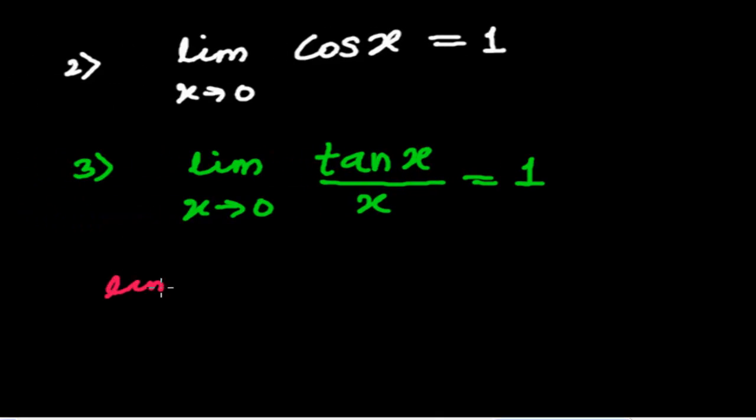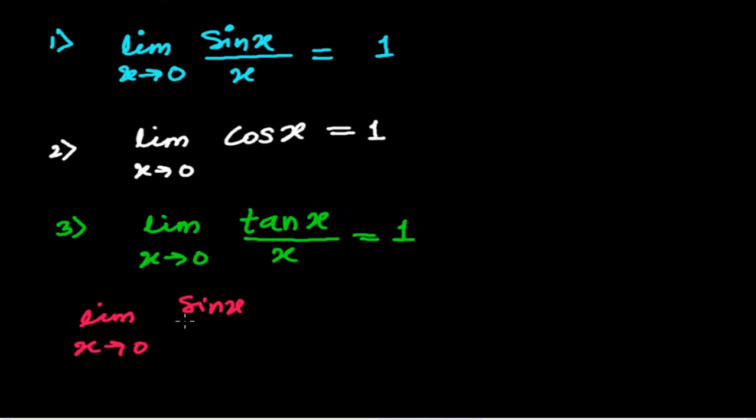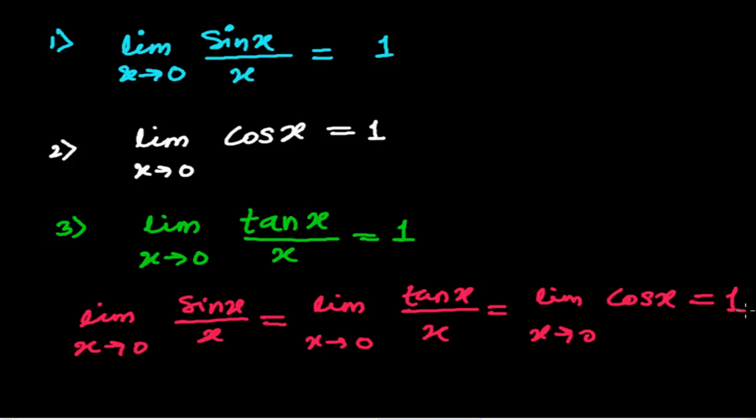Simply, limit when x tends to 0, sin x upon x equals to limit when x tends to 0, tan x upon x equals to limit when x tends to 0, cos x is equals to 1.